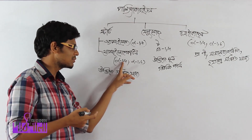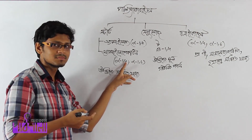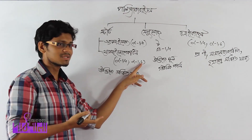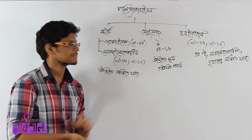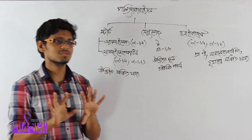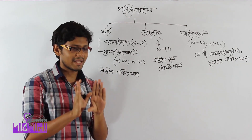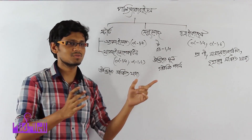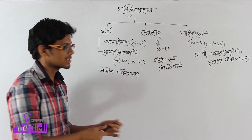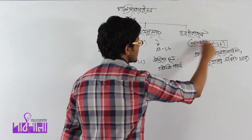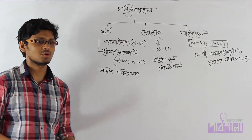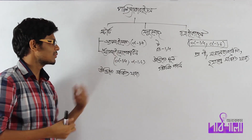Amylose has alpha-1,4 glycosidic bonds. Amylopectin has both alpha-1,4 and alpha-1,6 glycosidic bonds — meaning carbon 1 of one glucose connects to carbon 6 of another. Cellulose has beta-1,4 bonds. The glycogen structure is called alpha-1,4 and alpha-1,6, so glycogen is similar to amylopectin.